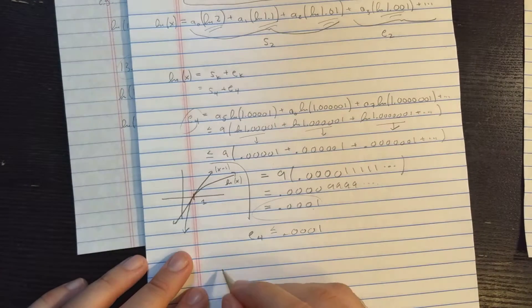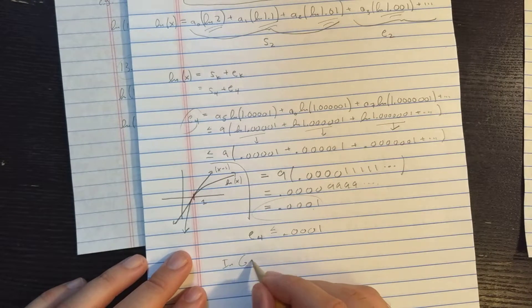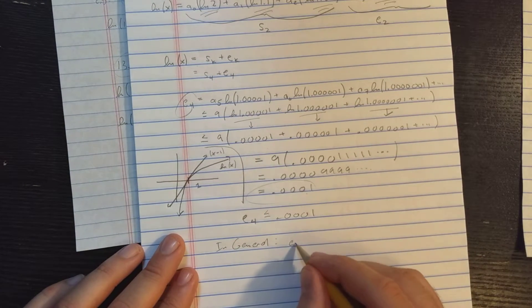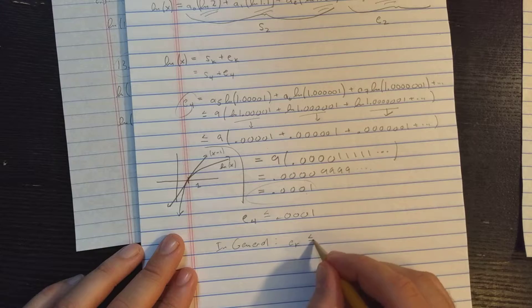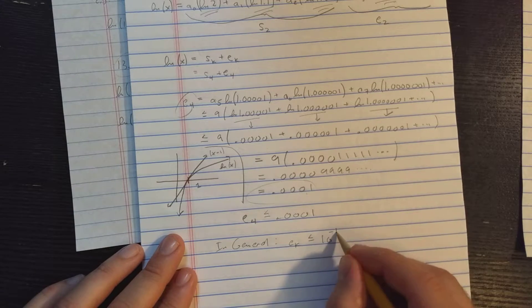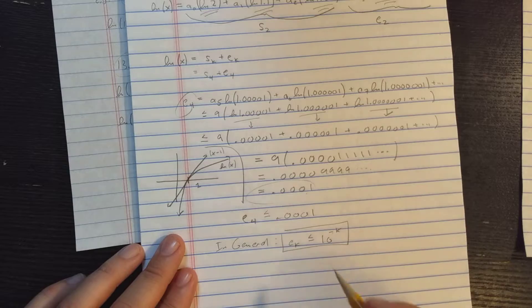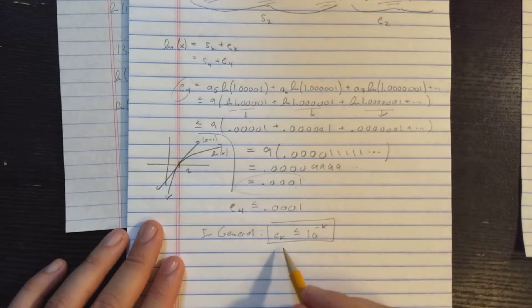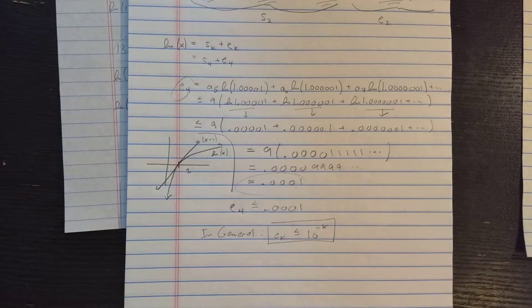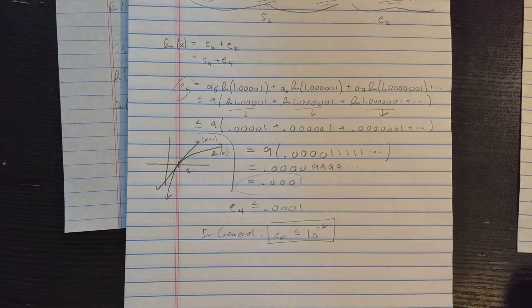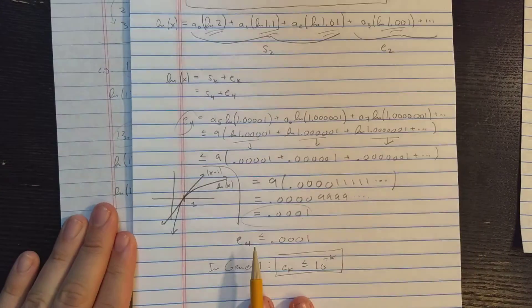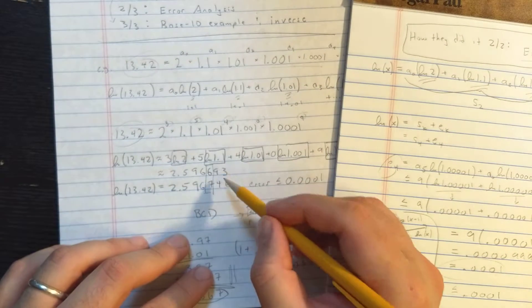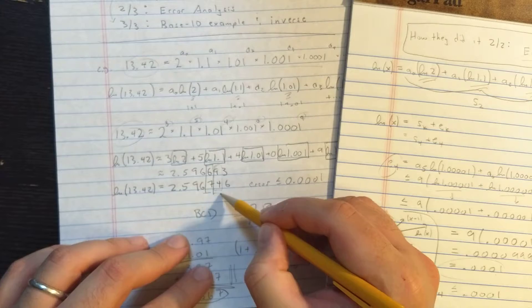In general, you can show, I'm not going to do it, but you could try it at home. You can show EK is less or equal 10 to the minus K. This is your error bound, which tells you what the error is when you stop at SK for your approximation. Okay, awesome. So if I want the next place to be more accurate, I simply compute another one, and then this is within one.